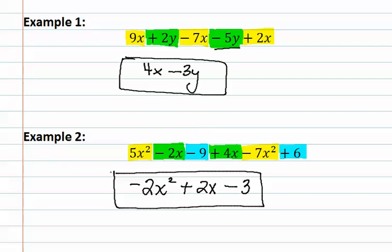The key to combining like terms is making sure that variables and exponents match, and then you are allowed to combine their coefficients or numbers together. Sometimes, it is helpful to highlight or circle or in some way label those that match, so that it is easily identifiable in a long list, such as example 2.